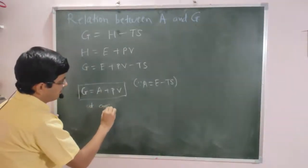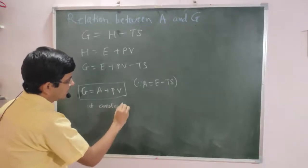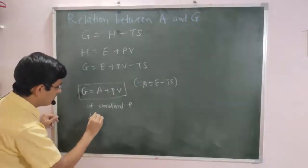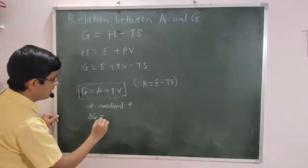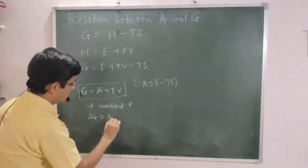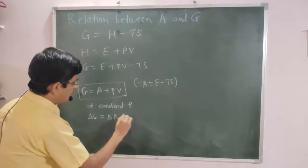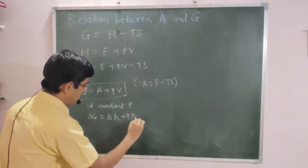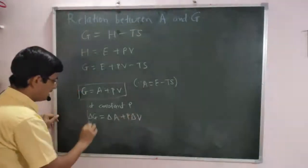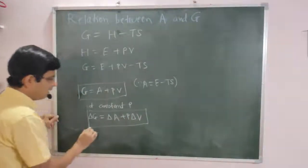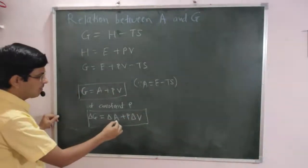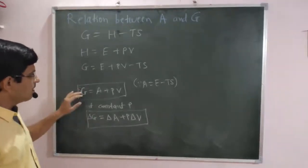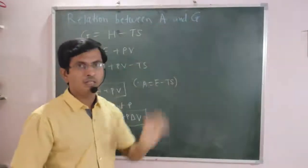Also, at constant pressure, the change in Gibbs free energy delta G is equal to delta A plus P into delta V. So the change in Gibbs free energy is related to the change in Helmholtz work function by this equation. This equation gives the relation between A and G.